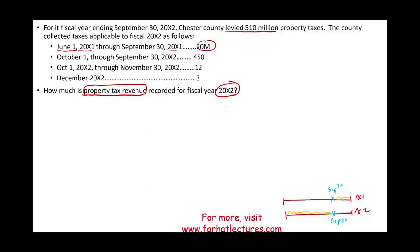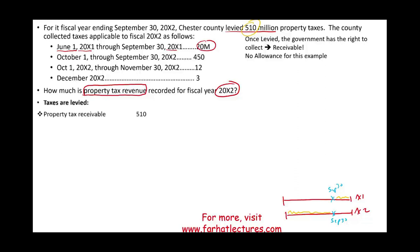When we levied the taxes — $510 million — the government has the right to collect the money. At this point we have a receivable. You do record property tax revenue as a receivable. So the first thing you do is book a receivable for $510 million: property tax receivable.